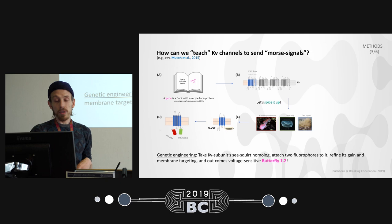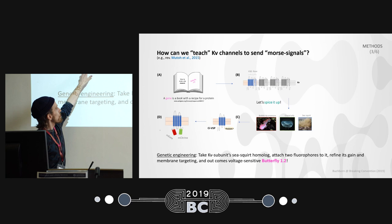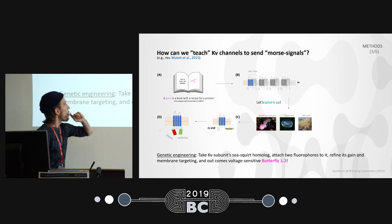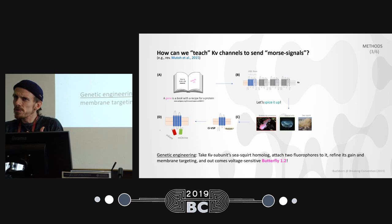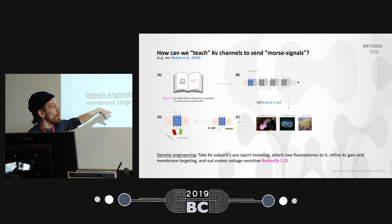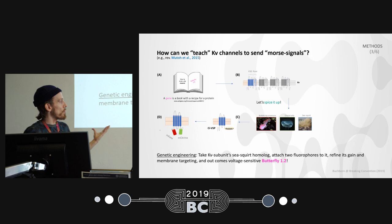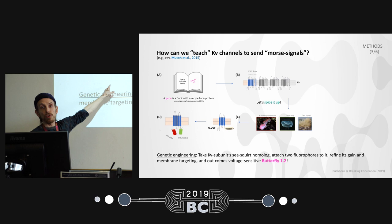They looked into nature and found something in the cuttlefish that looks a little bit like a potassium channel. Then they added two fluorophores — taken from nature, from the crystal jelly and from the bubble tip anemone. They improved the gain so it can respond to neuronal voltages, and improved the membrane targeting so it can be easily incorporated into the membrane of cells. The result is what the Knöpfel lab called Butterfly 1-2, and this is what we're using to make our measurements.